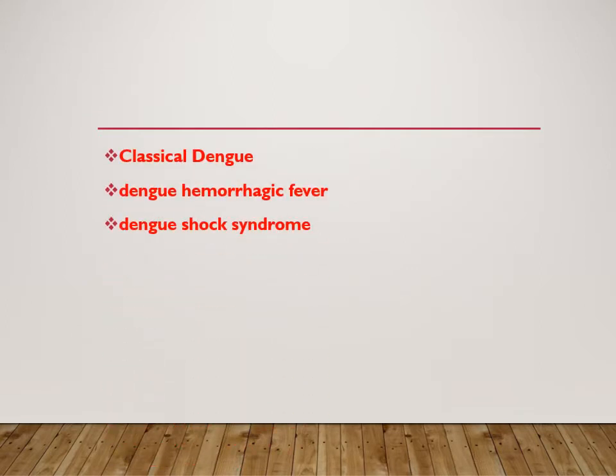There can be three presentations of dengue. Most commonly it is classical dengue. Second is dengue hemorrhagic fever, if the patient develops hemorrhagic complications. Third is dengue shock syndrome. In classical dengue, all the features mentioned previously are the common symptoms and the most common presentation, but sometimes the patient may progress to complications.